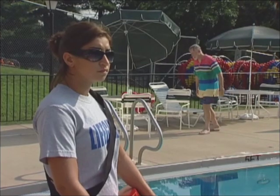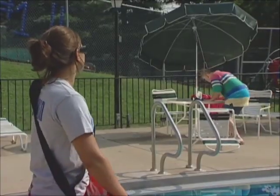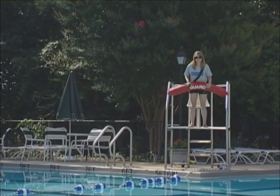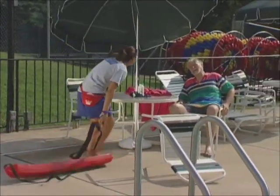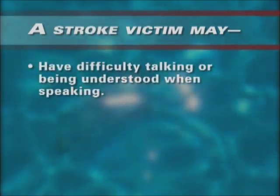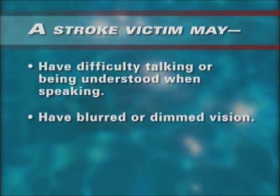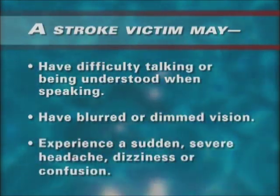A person having a stroke may suddenly have weakness or numbness of the face, arm, or leg — usually only on one side of the body. In addition, the victim may have difficulty talking or being understood when speaking, have blurred or dimmed vision, experience a sudden severe headache, dizziness, or confusion.